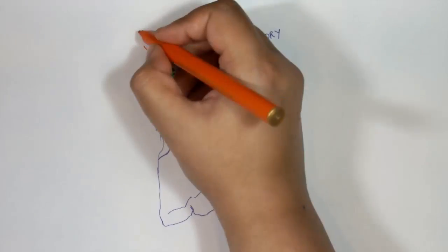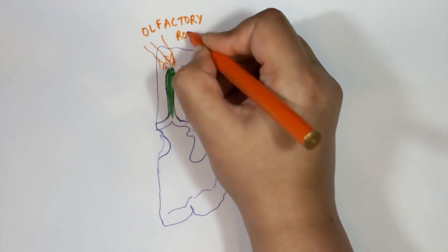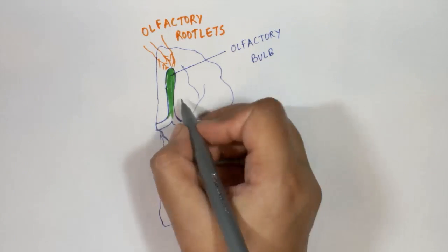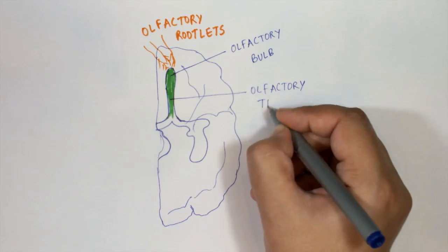Here are the olfactory rootlets which enter into the olfactory bulb, and the olfactory bulb sends the olfactory tract which continues posteriorly. This is the olfactory tract.